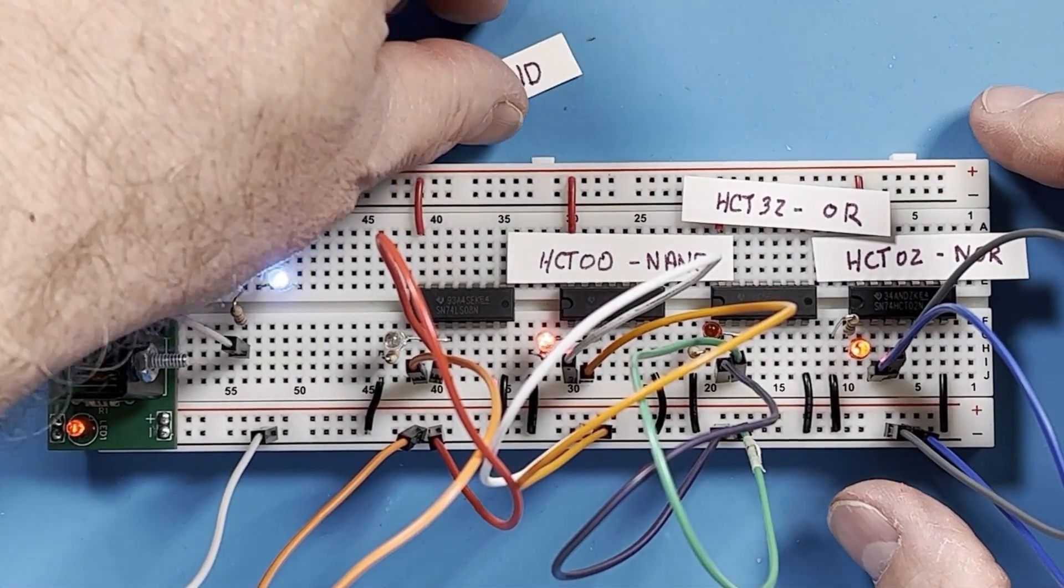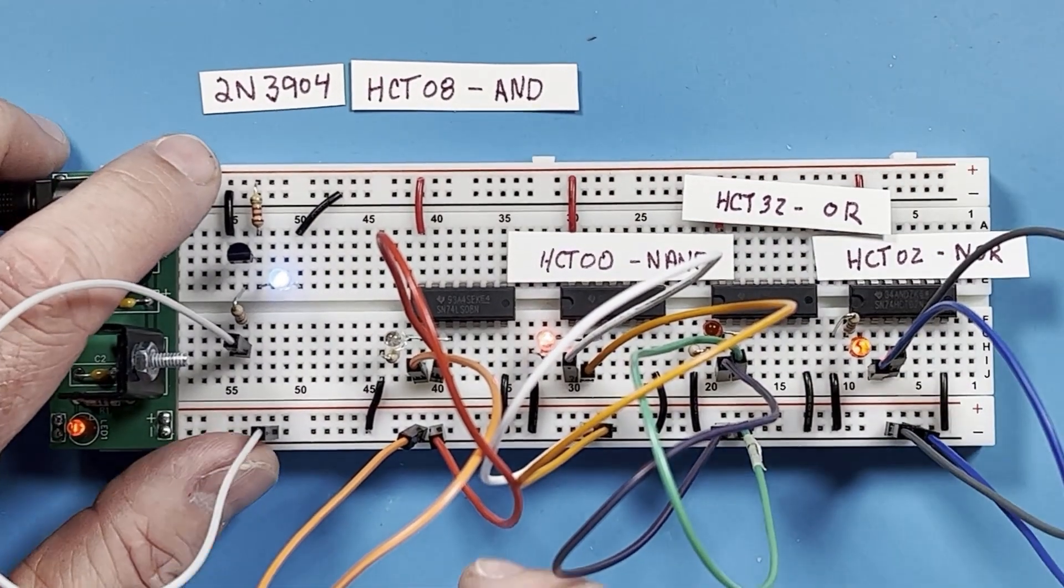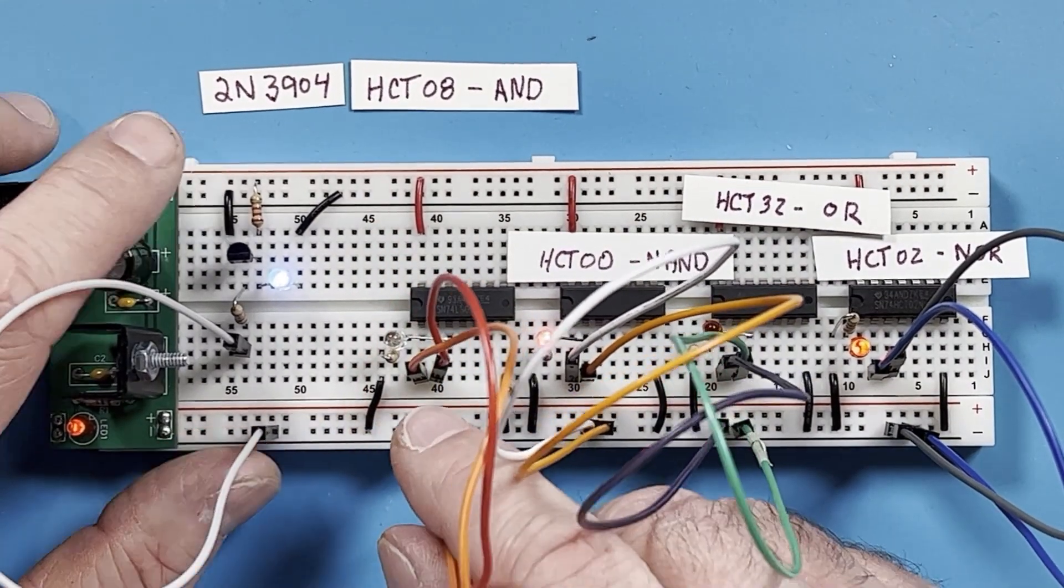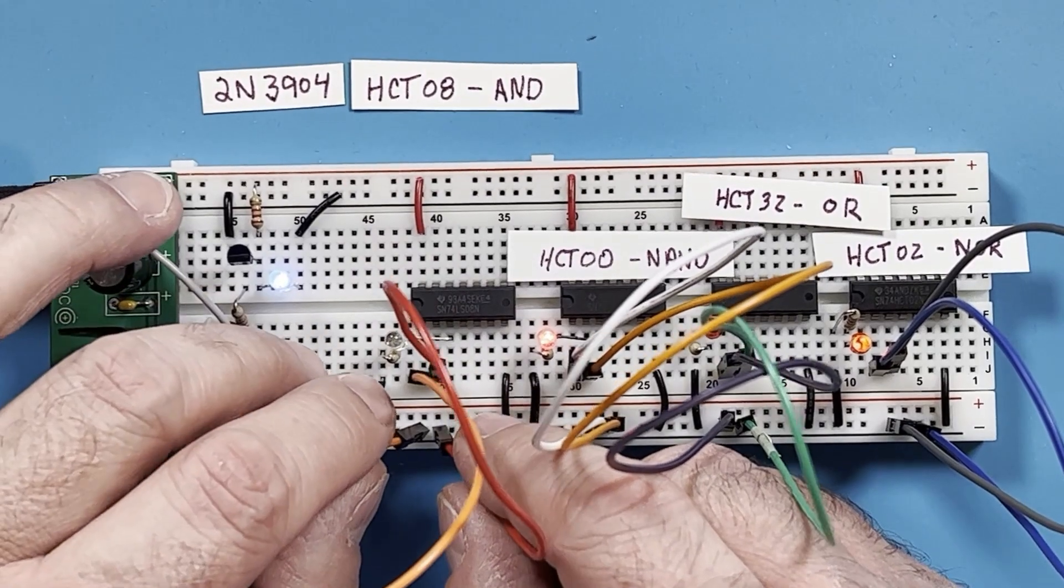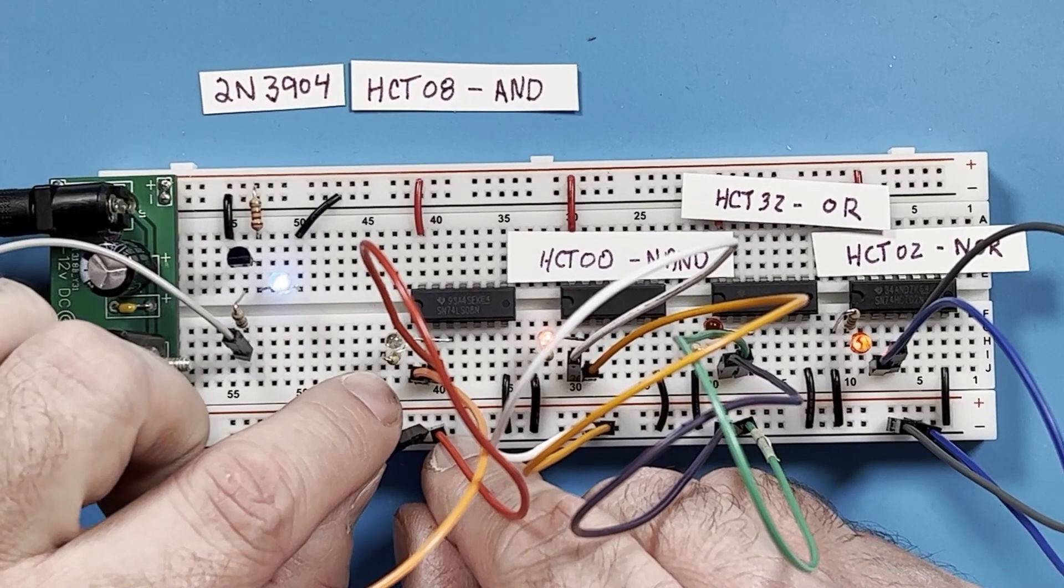Now over here I have an HCT08 AND gate. An AND gate does exactly what it sounds like logically. If pin 1 and pin 2 are high, then the output is high. Otherwise, the output is low.